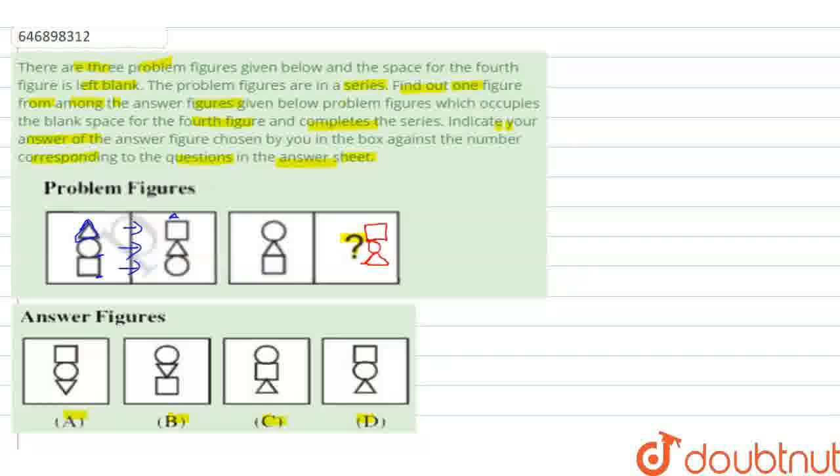The first answer figure has the square at the bottom, the circle in the middle, and the triangle on top. But the triangle has changed its direction, so this option is not correct.